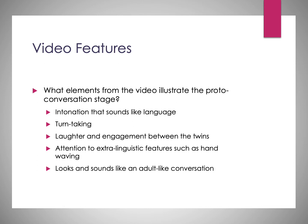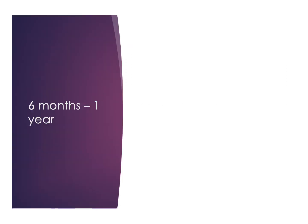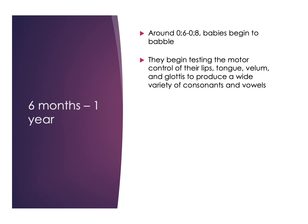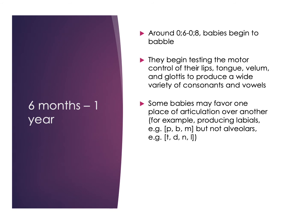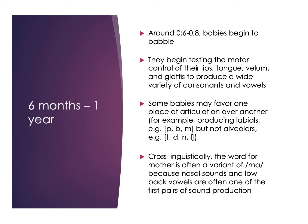Around six to eight months, babies begin to babble and start testing out their motor control — moving their lips, tongue, velum, and glottis to produce a variety of consonants and vowels, starting with just a few and expanding over time. Some may favor one place of articulation over another — many babies start with mostly labials, or prefer alveolars. Cross-linguistically, this is part of why the word for 'mother' is often some variant of 'ma' — nasal sounds and low back vowels are often the first sounds tested out in babbling. It's easy to open your mouth, say 'ah,' and the 'mama' sound is just opening and closing your lips.